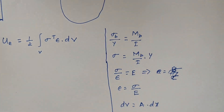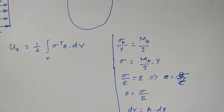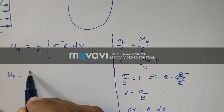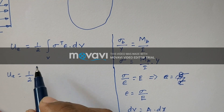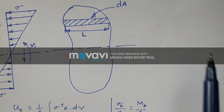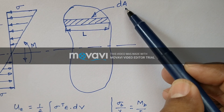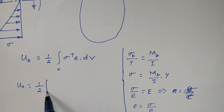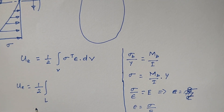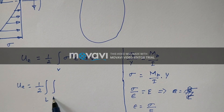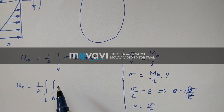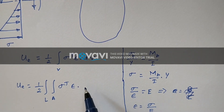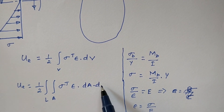Now we will substitute all those values into the primary strain energy equation. So uE is equal to 1/2. Since we have two parameters here — one over the length and one over the area — we will take two integrals: one with respect to length and one with respect to area. So sigma transpose times epsilon, and dV can now be written as dA times dx.